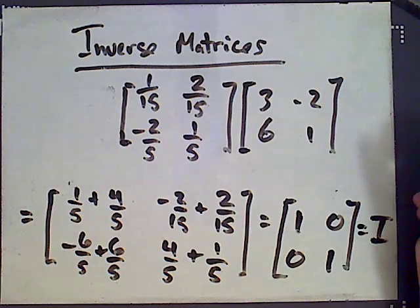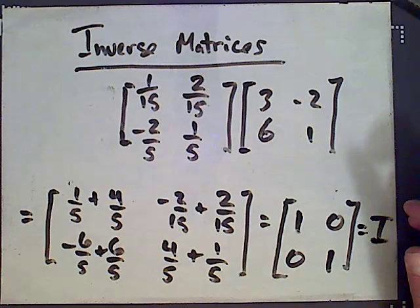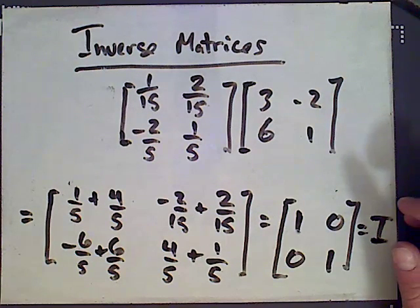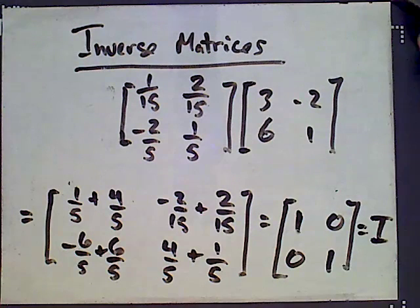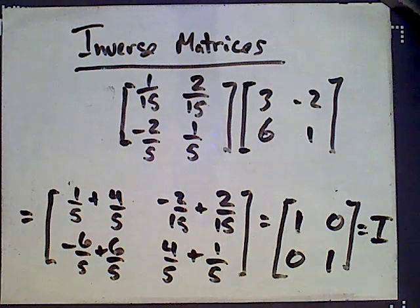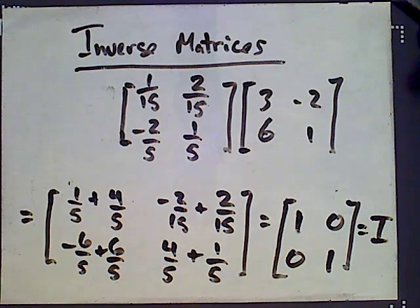So of course a similar notion exists for matrices of bigger sizes—3 by 3, 4 by 4, and so on. Again, not every matrix has an inverse, and matrices that aren't square don't have inverses. So the idea of an inverse of a matrix only exists for square matrices.